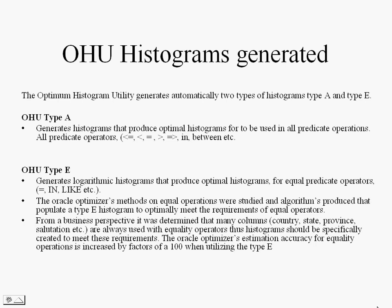From a business perspective, it was determined that many columns — country, state, province, salutation, etc. — are always used with equality operators. Thus, histograms should be specifically created to meet these requirements. The Oracle Optimizer's estimating accuracy for equality operations can be increased by factors of 100 when utilizing Type B histograms.